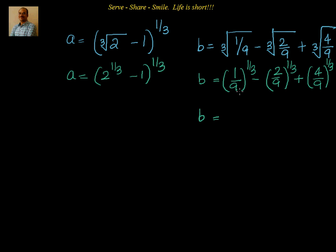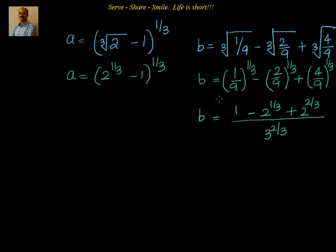We see that in the denominator we have 9^(1/3) common. So can I write it as 1 minus 2^(1/3) plus 4 — and 4 is nothing but 2 squared — so 2^(2/3), divided by 9^(1/3). Since 9 is 3 squared, that is equal to 3^(2/3). So 1^(1/3) is 1, 2^(1/3), and 4 is 2 squared giving 2^(2/3), all divided by 3^(2/3).